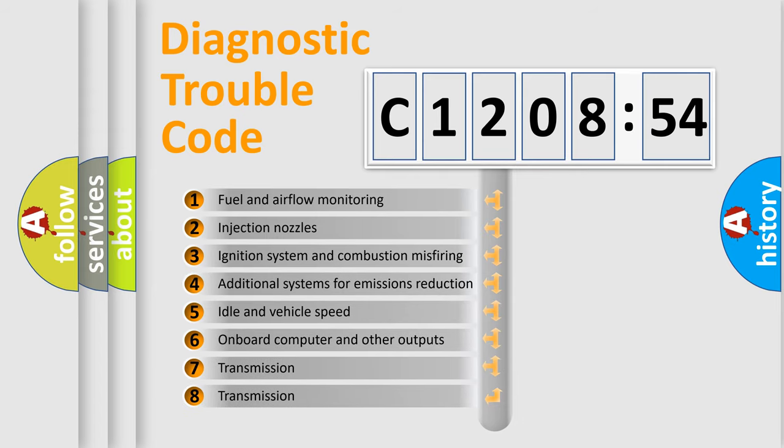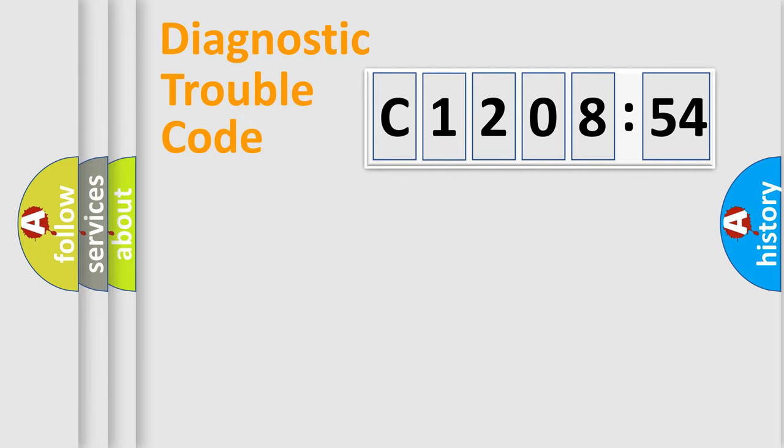The third character specifies a subset of errors. The distribution shown is valid only for the standardized DTC code. Only the last two characters define the specific fault of the group.